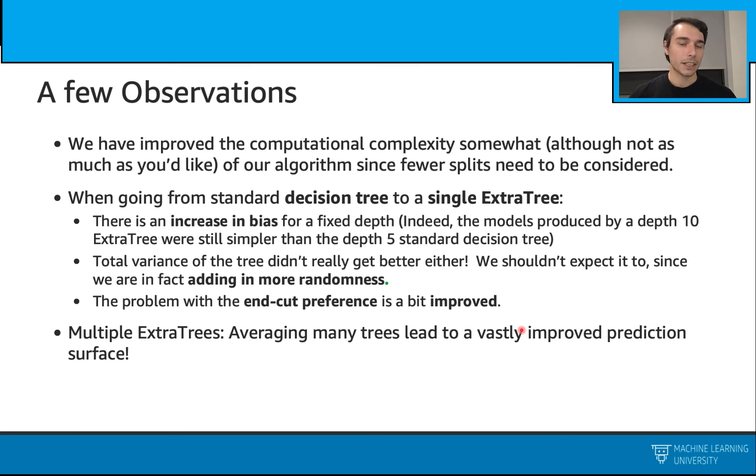Also, our end-cut preferences improved, so that's good. But overall, our error will be more with the ExtraTree here. What we can do, we can have multiple of these ExtraTrees. This time the story changes. When we average all those, we have a vastly improved prediction surface.